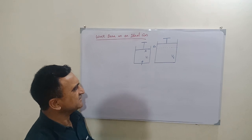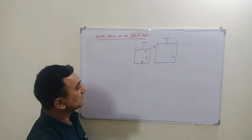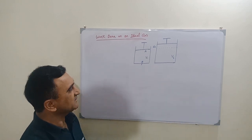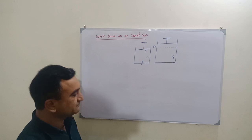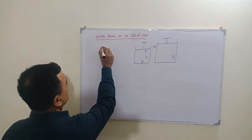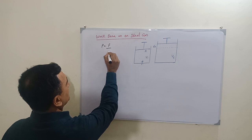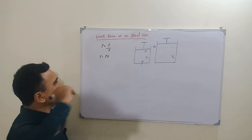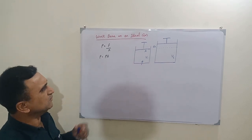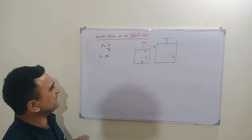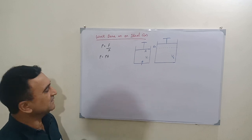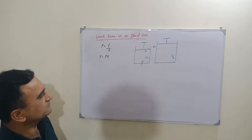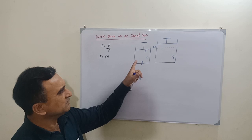When the temperature of the gas rises, the gas expands and exerts a force on the piston. That force is equal to F = PA, where F is the force exerted by the gas molecules on the piston having cross-sectional area A, and P is the pressure — defined as force per unit area. So F = PA is the force exerted by gas molecules in the upward direction.